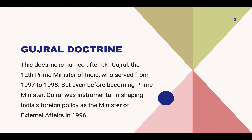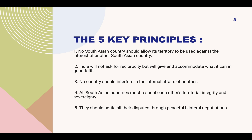The Gujral Doctrine revolved around five key principles, all of which emphasised non-reciprocal generosity towards India's smaller neighbours, in hopes of creating a more peaceful and cooperative South Asian region.